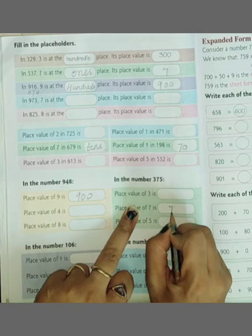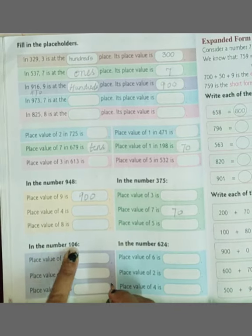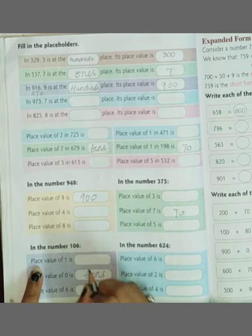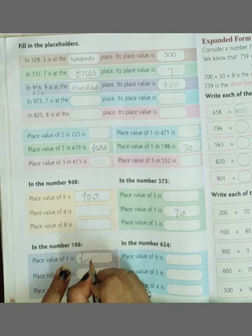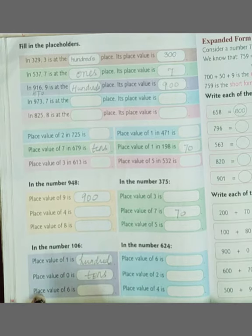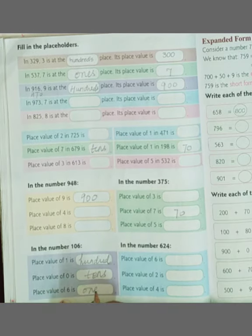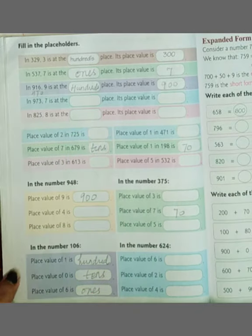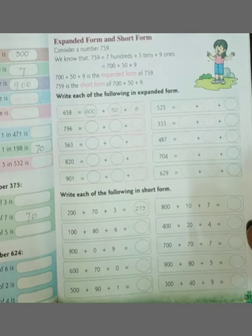In the number 106, 0 will be at tens place, 1 will be at hundreds place, place value of 6 will be at ones place. This you will do which I have left, that you have to do it as homework. Okay, now come to the page number.